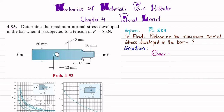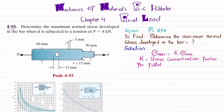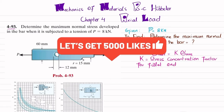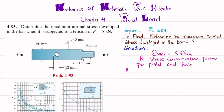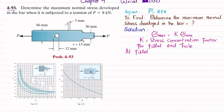We know that maximum stress is equal to k times sigma_average, where k is the stress concentration factor. We will find k for both the fillet and the hole. Starting with the fillet, we need to find some values before we can determine k.